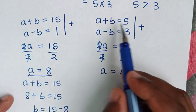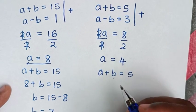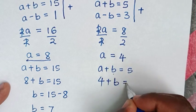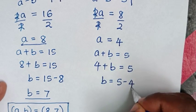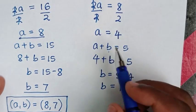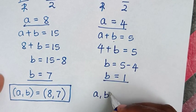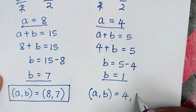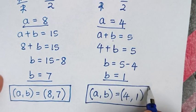From the first equation of the second system, a plus b equals 5. Substituting a equals 4, we get 4 plus b equals 5. Taking 4 to the other side gives b equals 5 minus 4, which is 1. Therefore, the second solution is a comma b equals (4, 1).